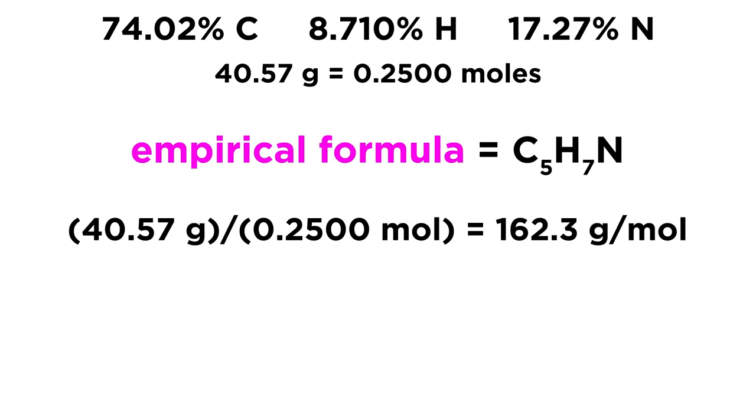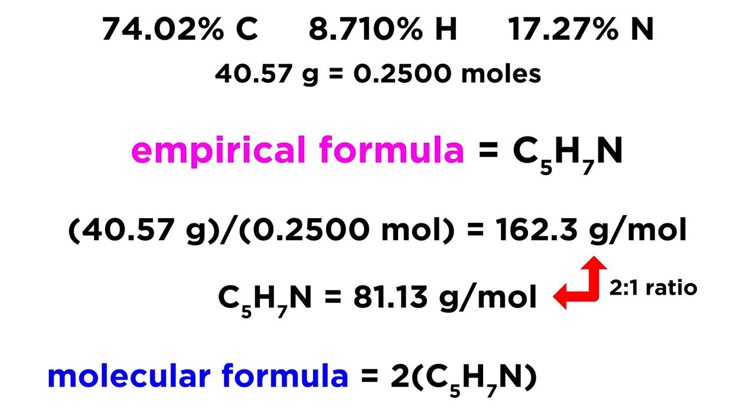So how is that useful? Well, we know that if we add up the masses of the 5 carbon atoms and the 7 hydrogen atoms and the 1 nitrogen atom, that adds up to 81.13 grams per mole. So that is the molar mass of 1 empirical formula unit. Now our molar mass is twice as much. We have a 2 to 1 ratio. So that means in order to get the molecular formula, which represents the actual number of atoms of each element in the molecule, all we need to do is double everything. So let's take our empirical formula and put it in parentheses and multiply it by 2. If we double everything, we'll get twice that mass and we will get our molar mass. And that means that the molecular formula must be C10, H14, N2.